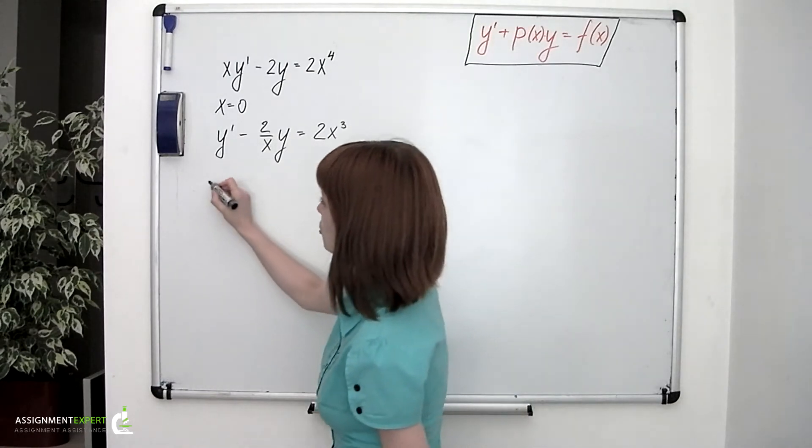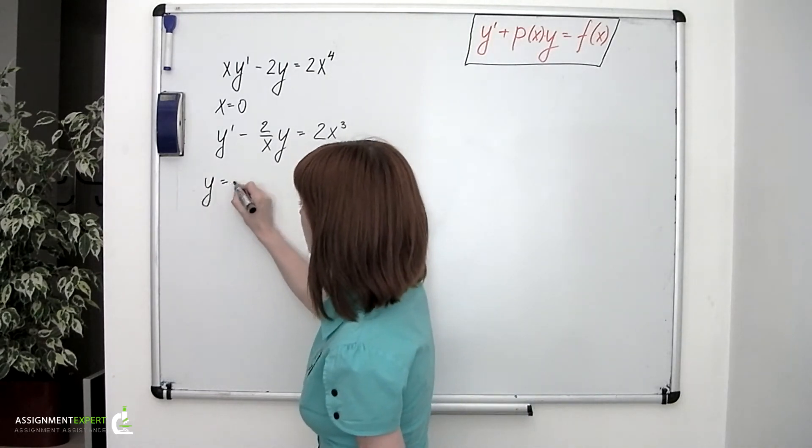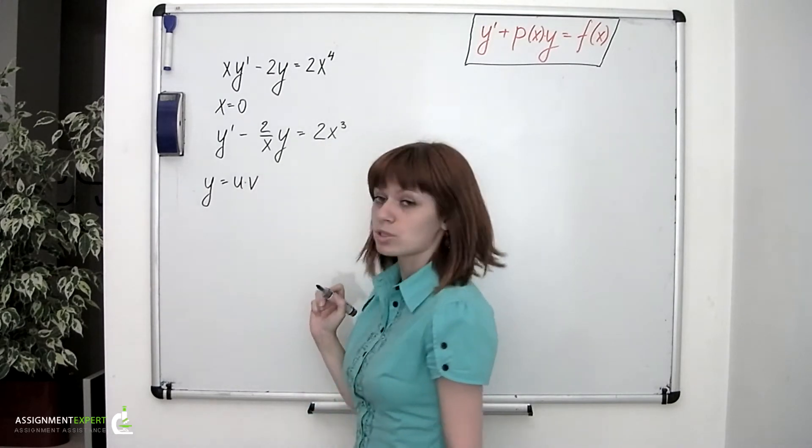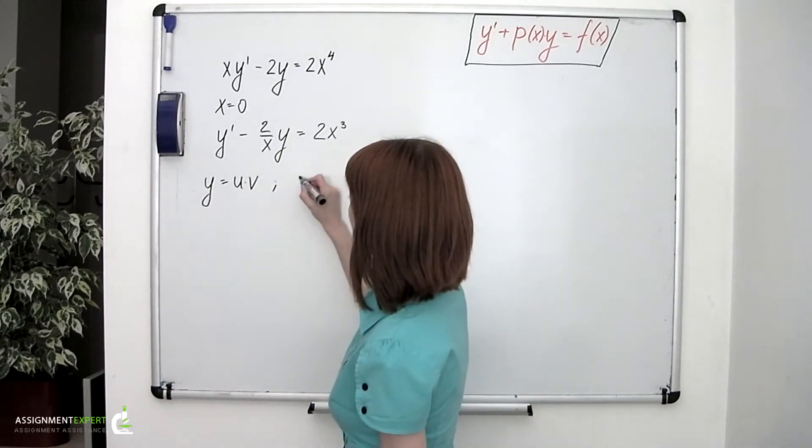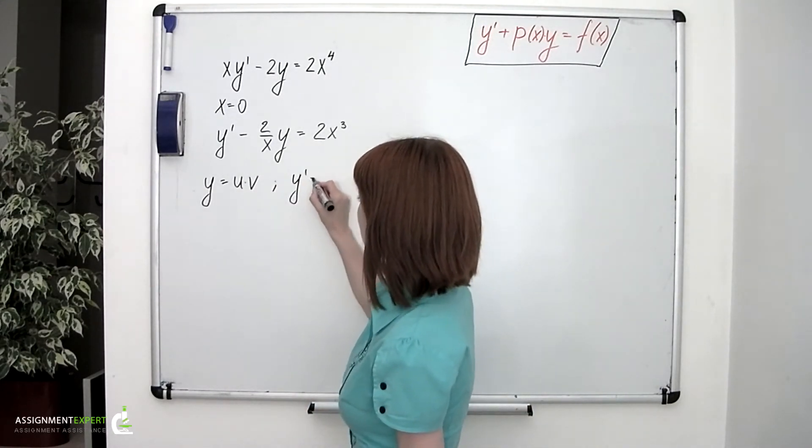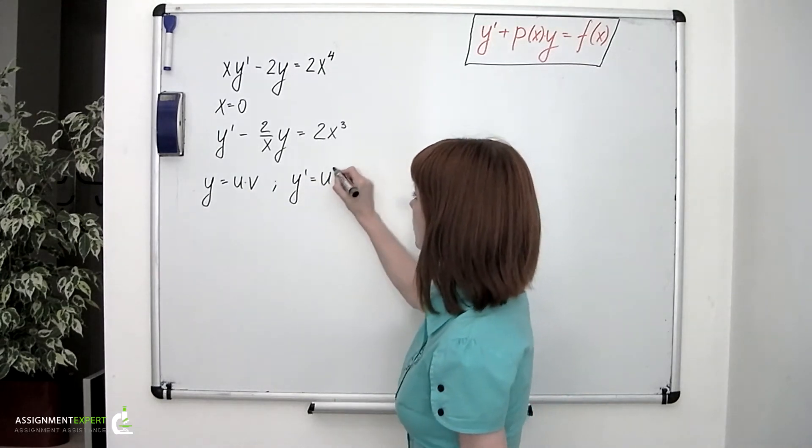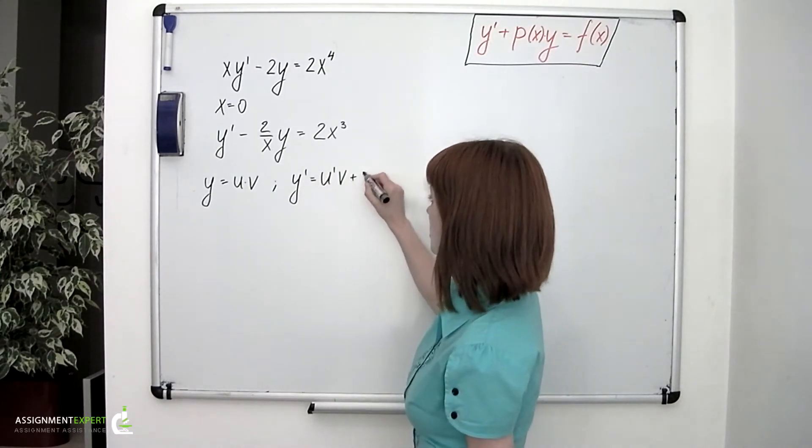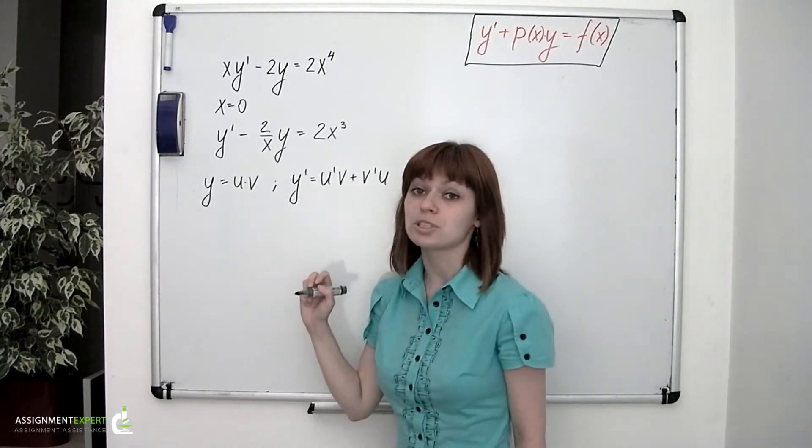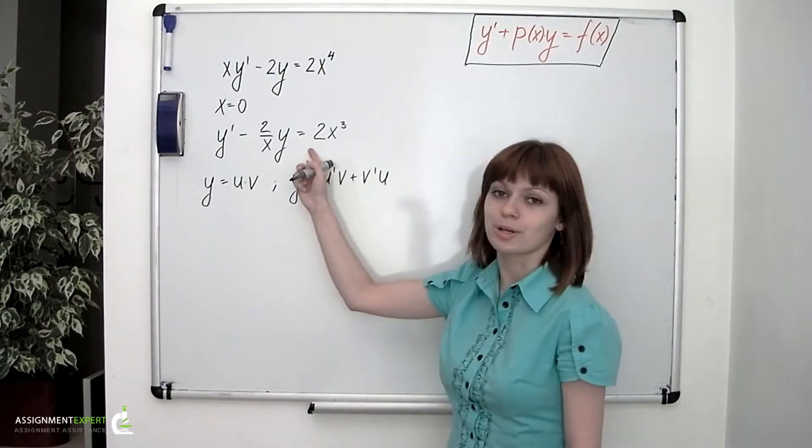Now we can make a substitution y equals u times v. We also remember that y prime equals u prime v plus v prime u. And now let's substitute these two expressions into our equation.